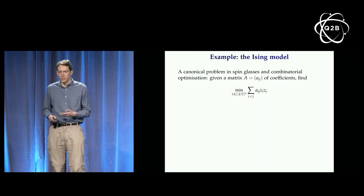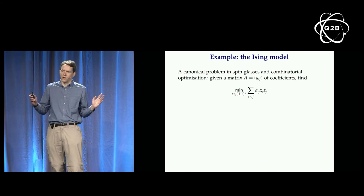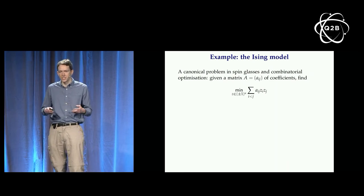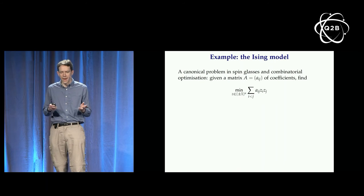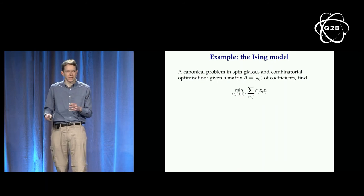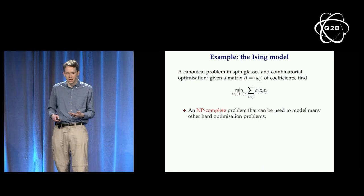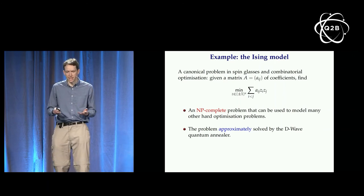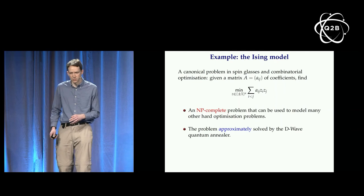In the Ising model, we're given a matrix with real-valued coefficients a_{ij}, and variables z_i each taking values plus or minus one, and we want to minimize the sum over pairs of a_{ij} * z_i * z_j. This models many interesting combinatorial optimization problems and is the problem approximately solved by the D-Wave quantum annealer. The particular case I was interested in is where the a_{ij} coefficients are random — picked from the Gaussian distribution — known as the Sherrington-Kirkpatrick model in spin glass physics.